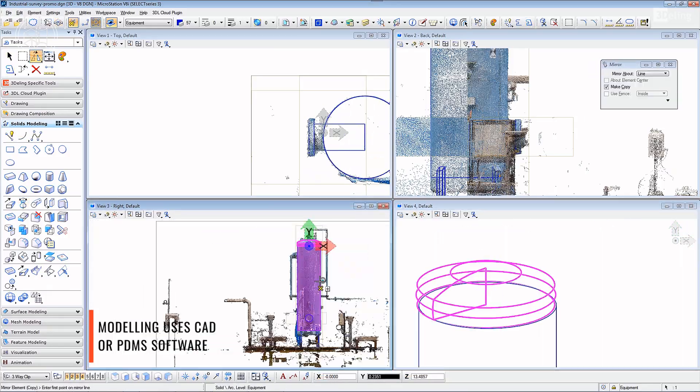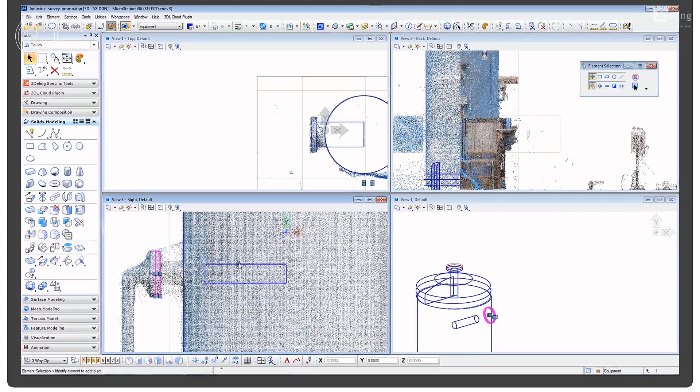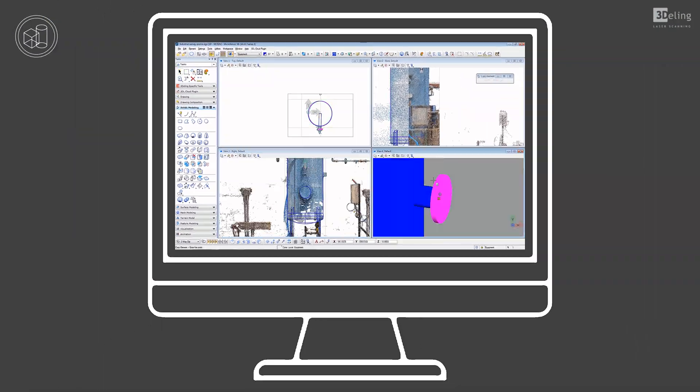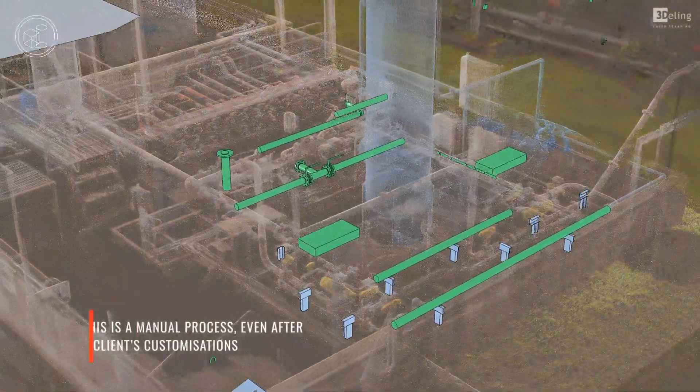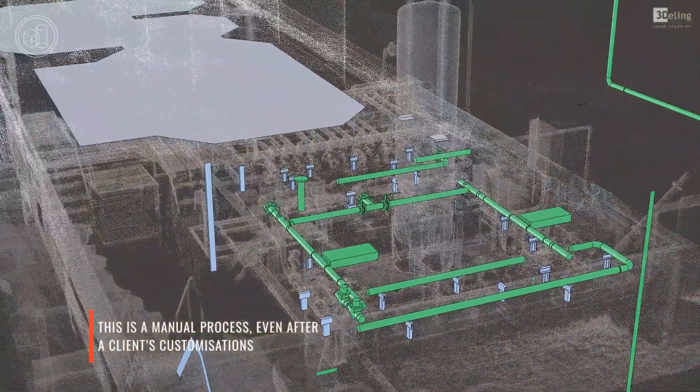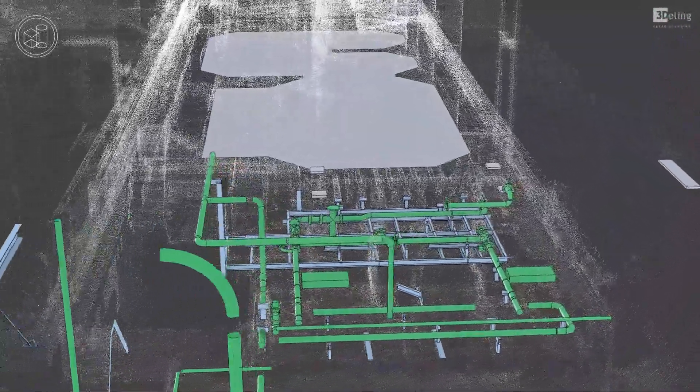At Threedling, we encourage a long-term strategy that works with your maintenance budget and capital expenditure. By prioritizing areas of the site and working on a project-by-project basis, you're able to build up a complete picture, one that is 100% as-built and correct.